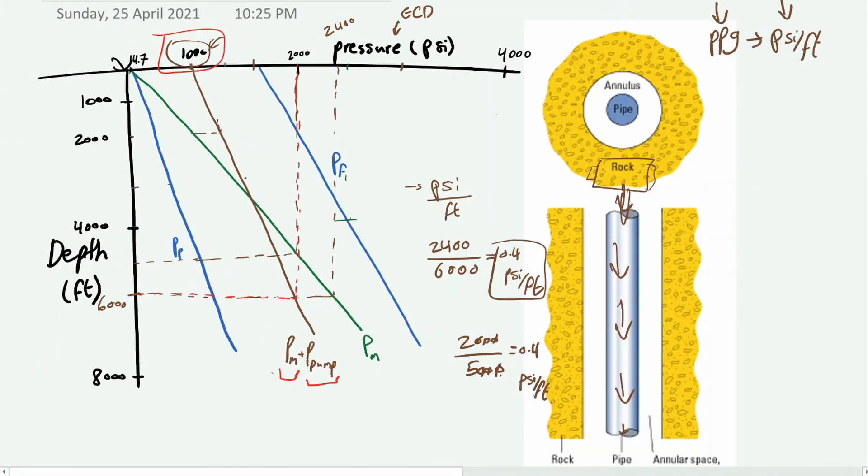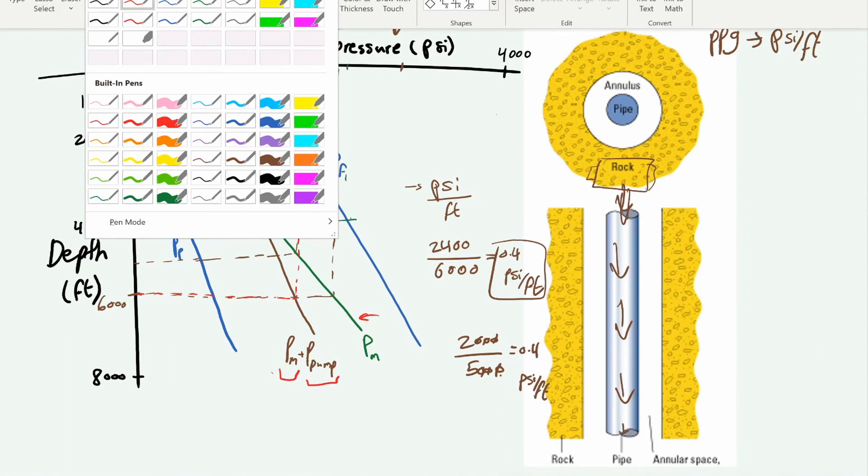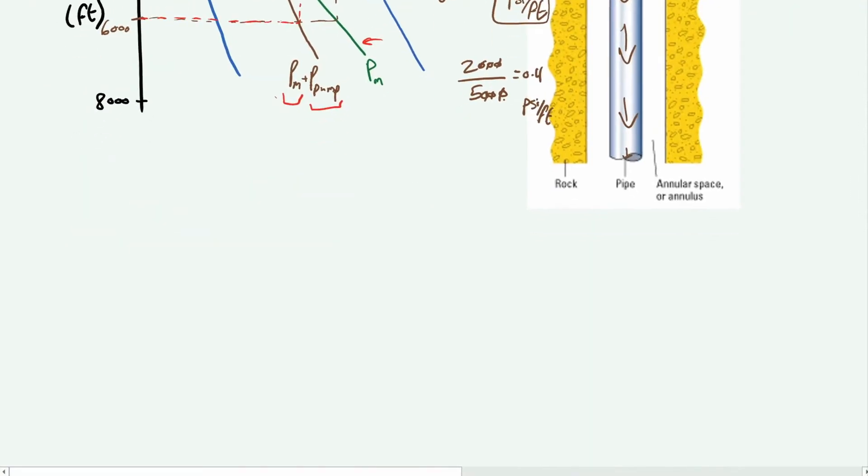Just to clarify, these two muds are different, they're not the same mud. So you have the wellbore where there is a pump of 1000 psi, and you have the other wellbore, the green one, which isn't being pumped. There is no exertion of force by the pump. Usually there is a pump, but this is just for explanation purposes.